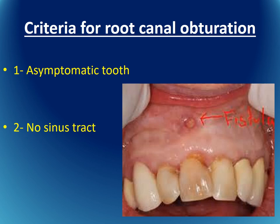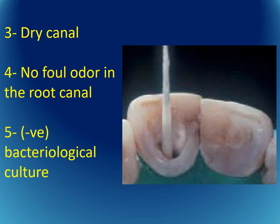The criteria for root canal obturation must be present before we proceed. First, the tooth should be asymptomatic — no signs, no sinus tract, and no fistula — meaning the pathology has receded. If a fistula is still present, we cannot perform obturation.